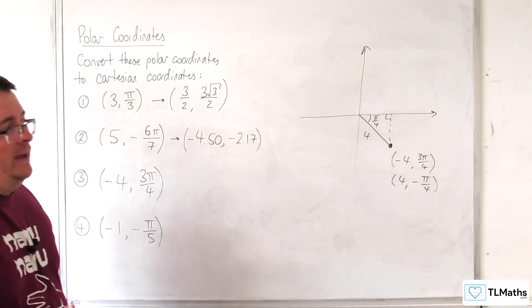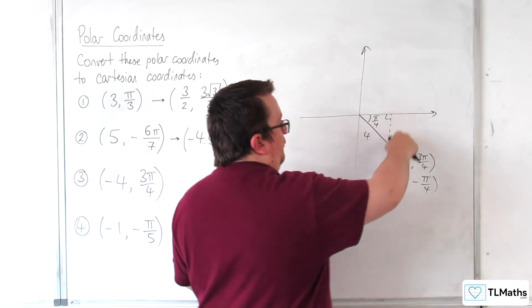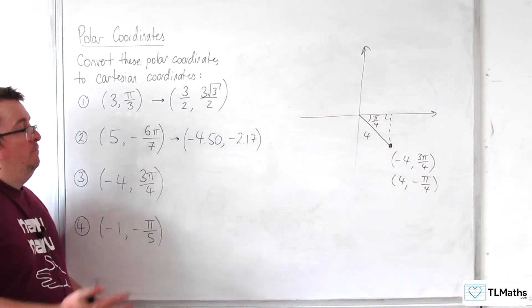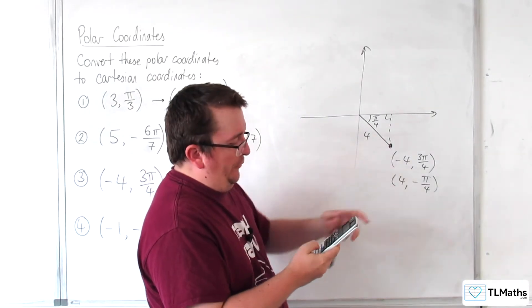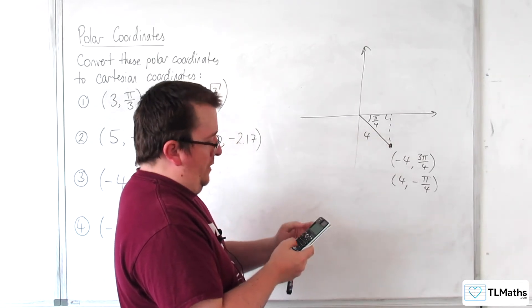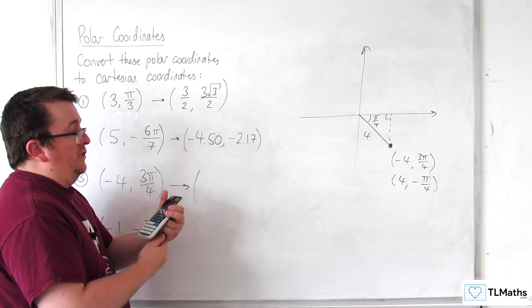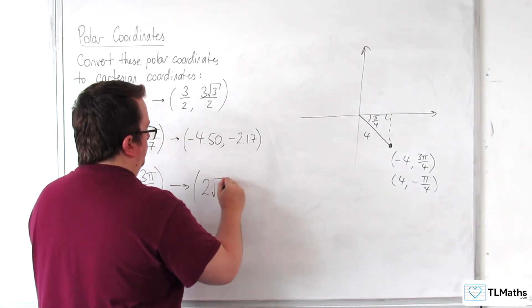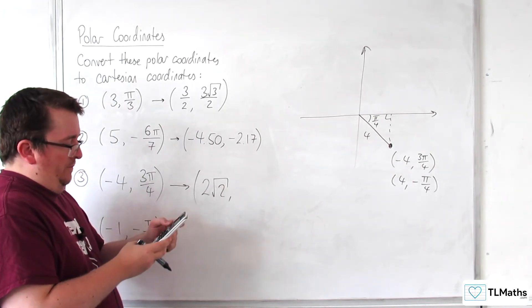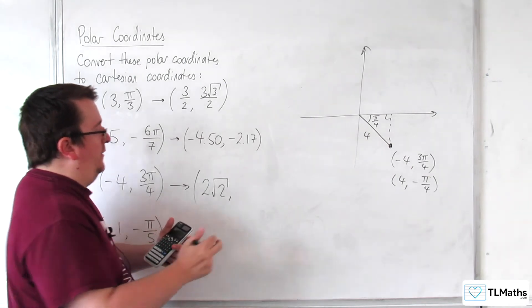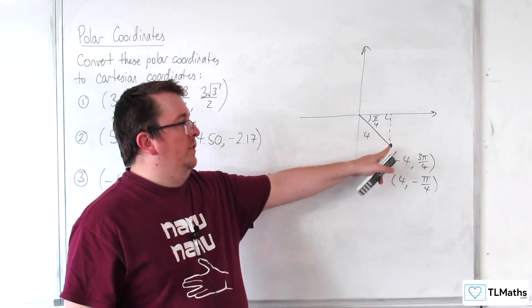Okay. So, you could use that and find 4 cosine pi over 4 and minus 4 sine pi over 4. Okay. Alternatively, on my calculator, I could do minus 4 cosine of 3 pi over 4, and that gets us 2 root 2. And then minus 4 sine of 3 pi over 4, and that gets us minus 2 root 2. Okay. Which places it in the correct quadrant.